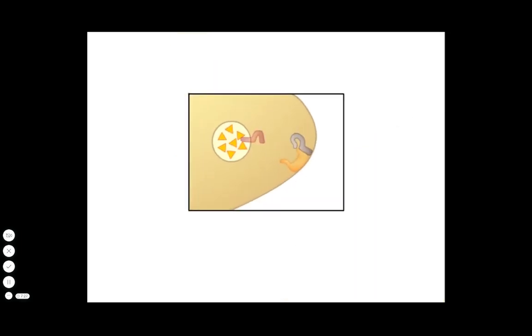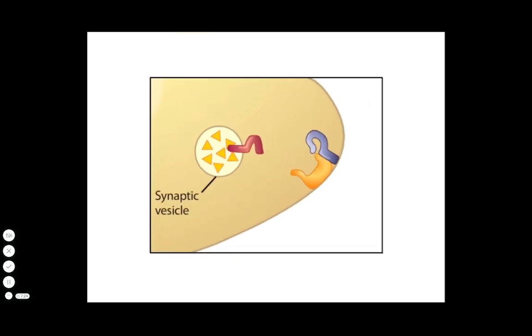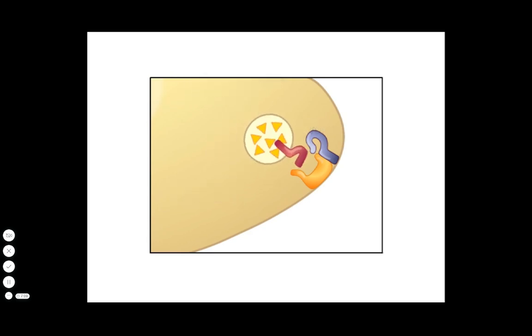The neuron contains synaptic vesicles full of neurotransmitter molecules ready for release outside the cell. In response to a neural signal traveling down the axon, the vesicles use vesicle-associated membrane proteins, or VAMPs, to bind to other proteins on the plasma membrane, triggering membrane fusion.